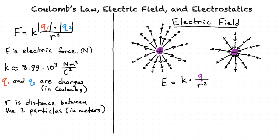From electric field and Coulomb's Law, we now have another formula for electric force: F equals QE, where Q is the charge of the particle in question and E is the electric field that the particle is subject to. Note that the E in this equation comes from a different charged particle. Substituting the electric field formula in for E gives us Coulomb's Law again: K times the magnitude of two different charges divided by R squared.